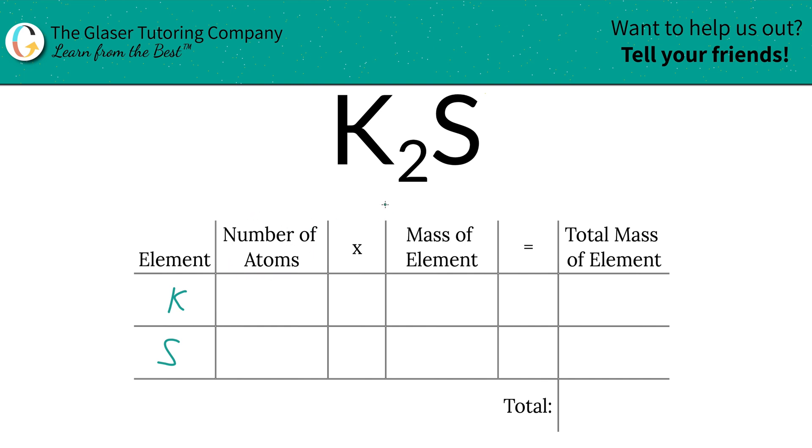Next is to write down the number of atoms. That's where the subscripts come into play. And if you don't see a subscript, just put in a one there. So we have two potassium, one sulfur.